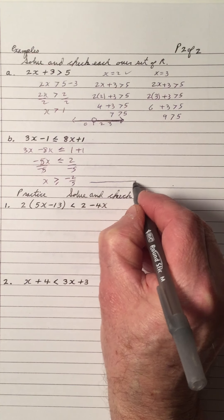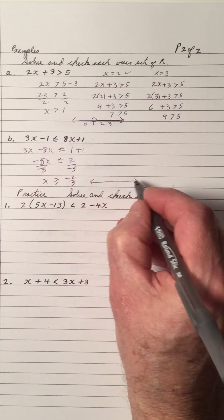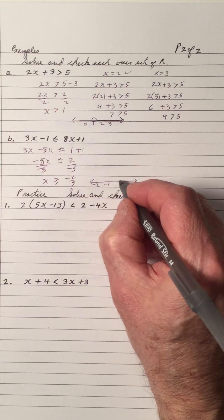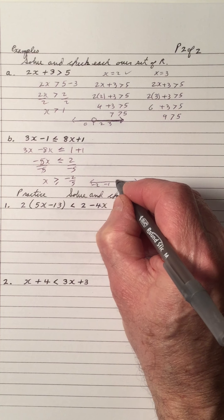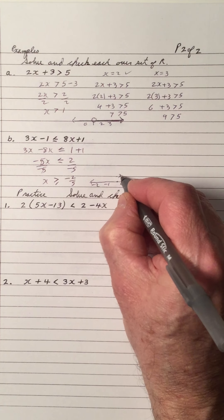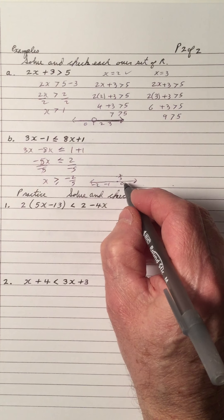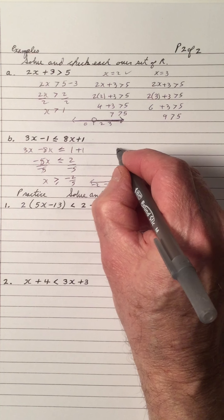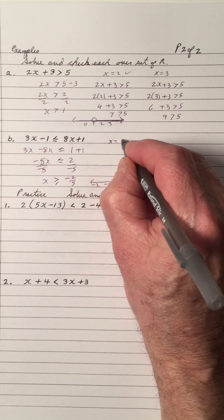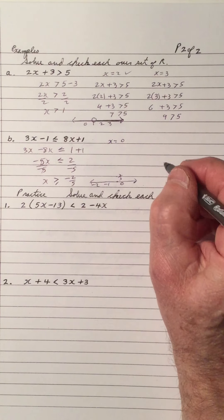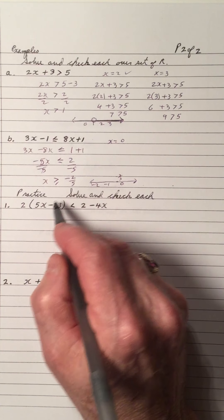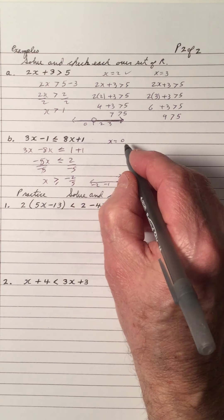So according to the number line, we have a 0, negative 1, negative 2. So negative 2 fifths is, let's just take an estimate to be about right here. And we have it greater than or equal to. So that means we could say that x equals 0 is one solution. We could say that any number greater than negative 2 fifths will fit.